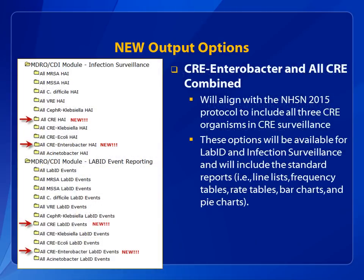Finally, due to the redefined all-inclusive reporting for CRE in 2015, output options have been added. Users can generate reports for each type of CRE, as well as for all three CREs combined. These options for LabID and infection surveillance include the standard reports, line lists, frequency tables, rate tables, bar charts, and pie charts.